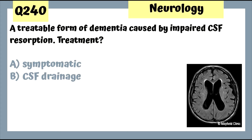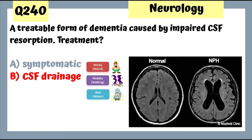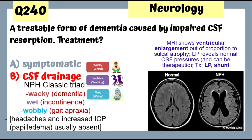Question 240: A treatable form of dementia caused by impaired CSF resorption — what's the treatment? The condition is normal pressure hydrocephalus. It presents with wacky, wobbly, and wet. Treatment is CSF drainage, lumbar puncture, or a shunt.